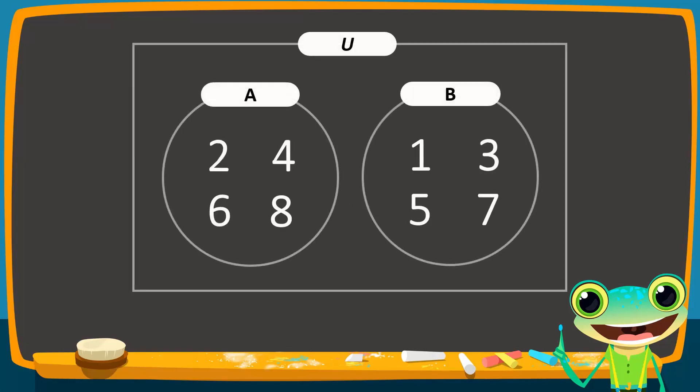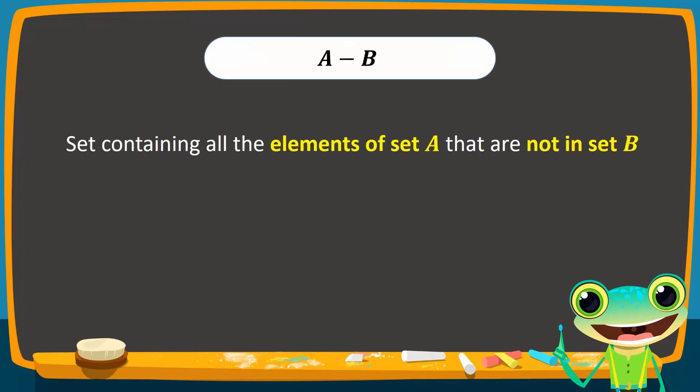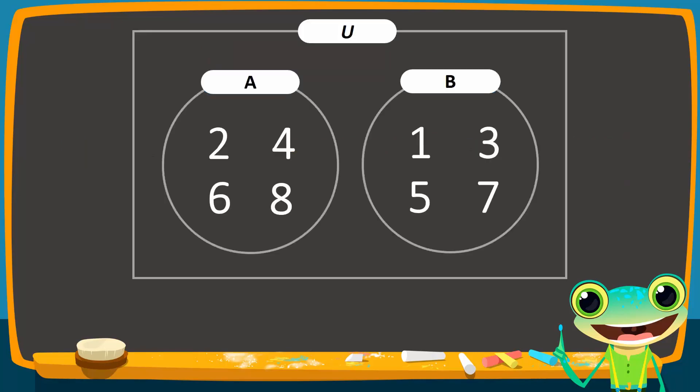On the Venn diagram, they are represented by two non-overlapping circles. To represent A difference B, we go back to the definition of difference. A difference B is the set that contains all the elements of set A that are not in set B. As before, this is equal to the region that contains elements only in set A. This is simply the full circle of set A.